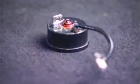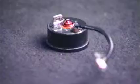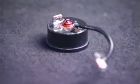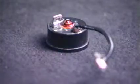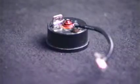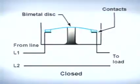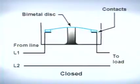An overload commonly used to protect small motors is the line brake overload, which breaks the power line that supplies power to the device. The most common type of line brake overload has a bimetal disk that flexes with changes in temperature that result from excessive current flow through the circuit.